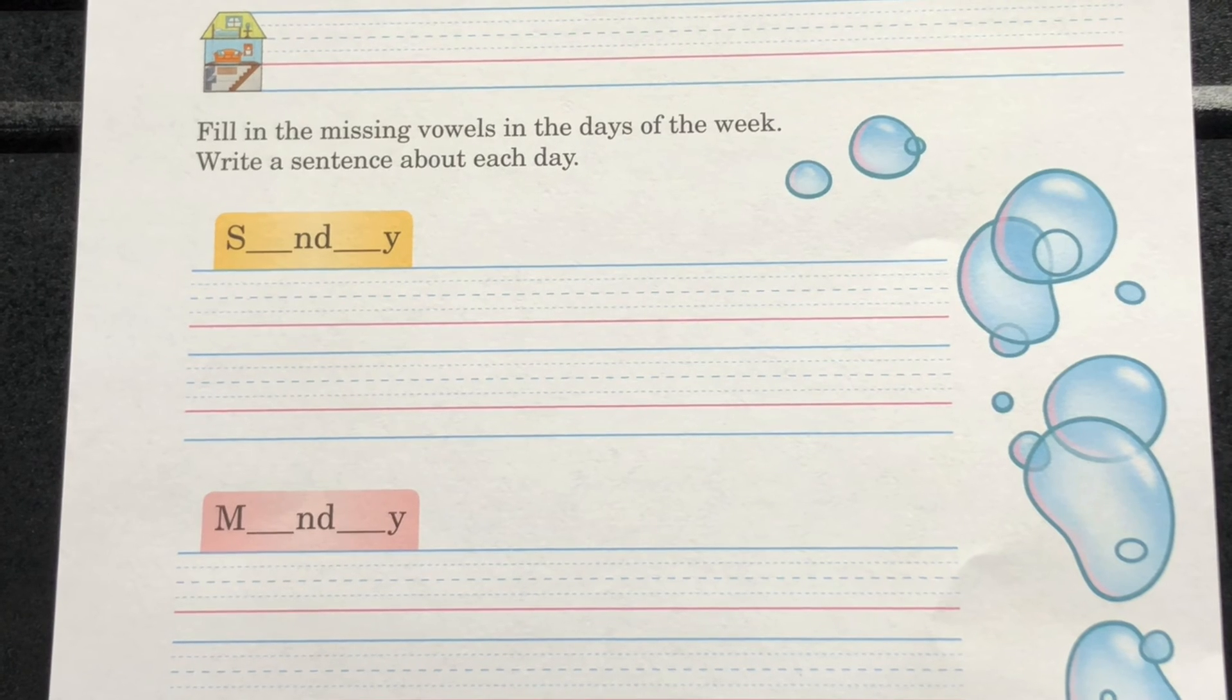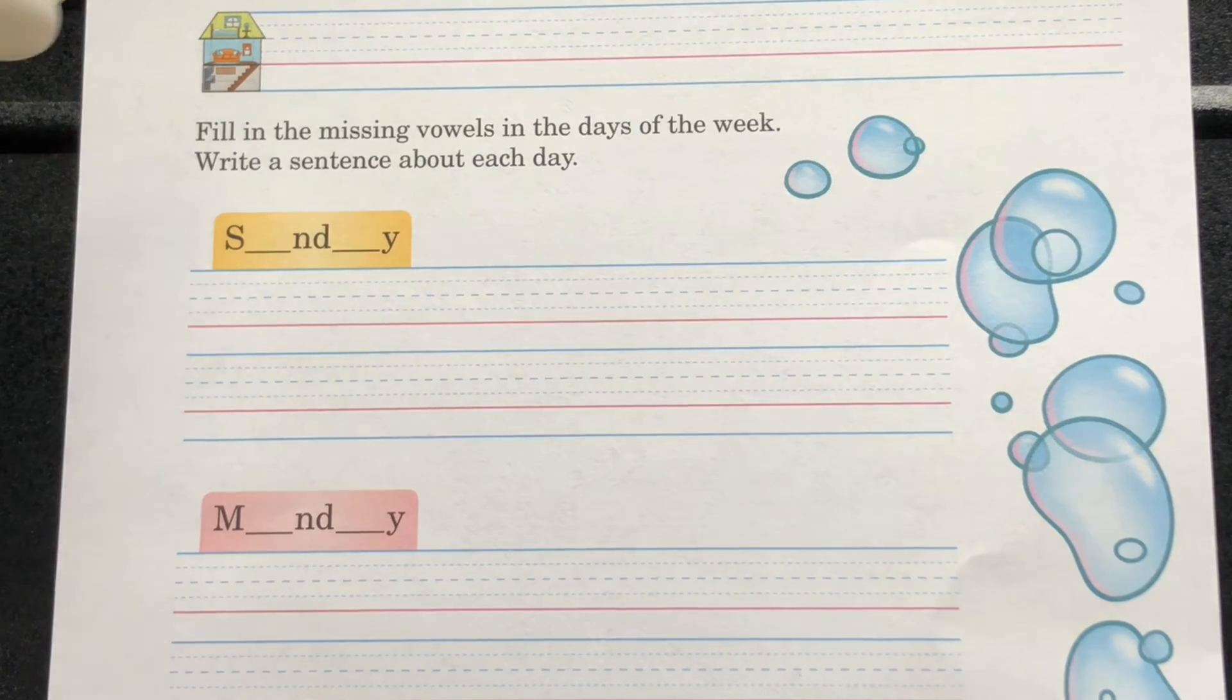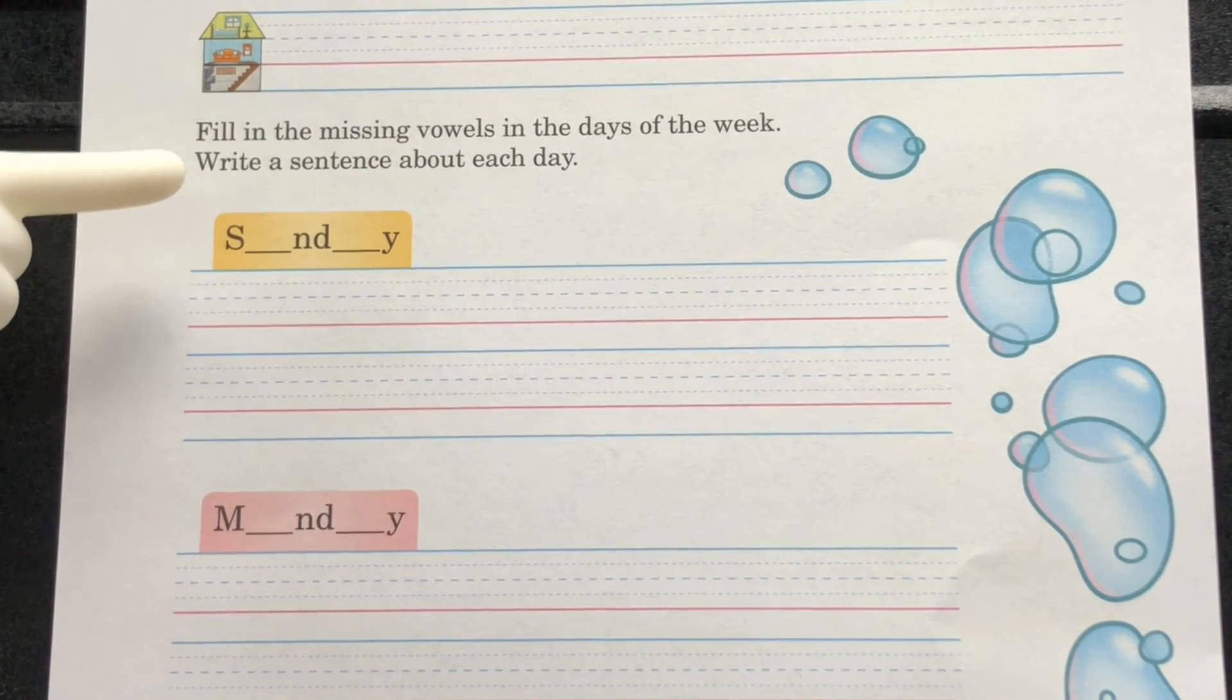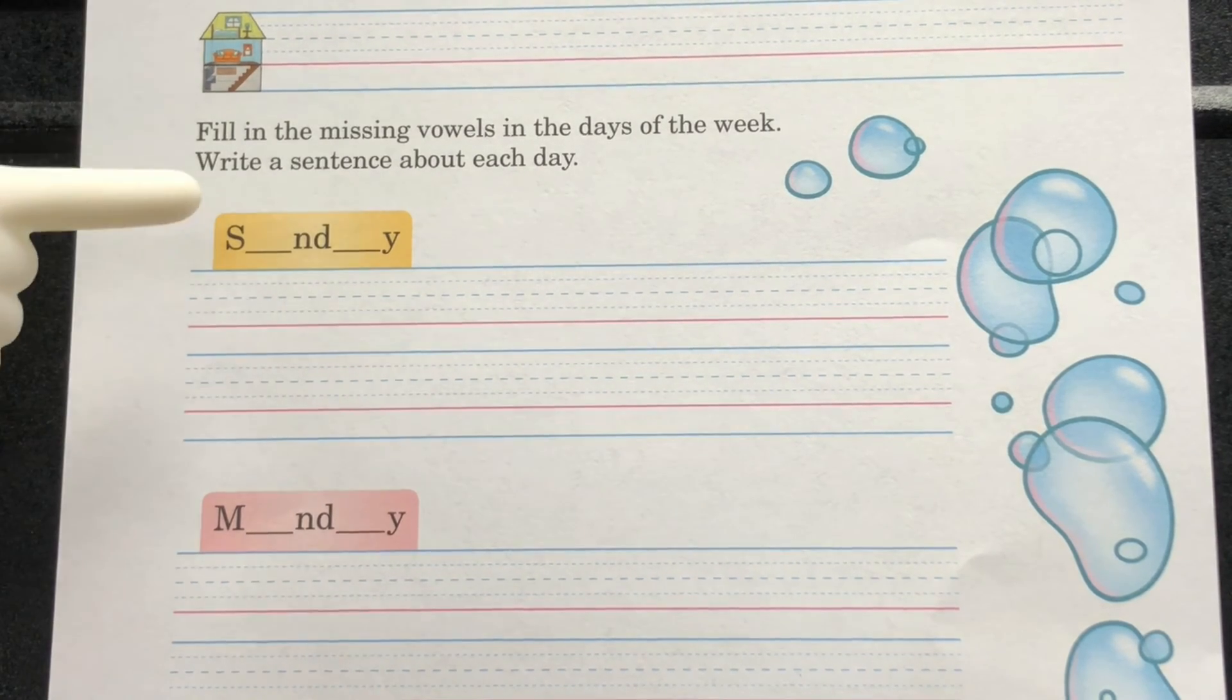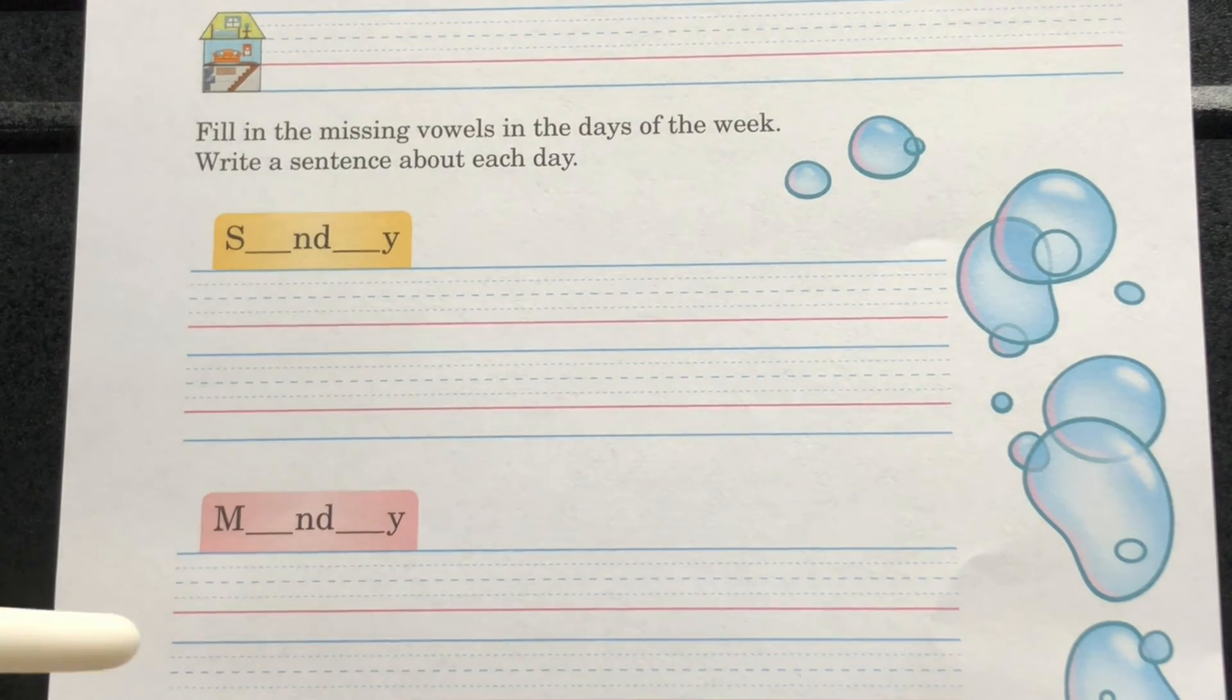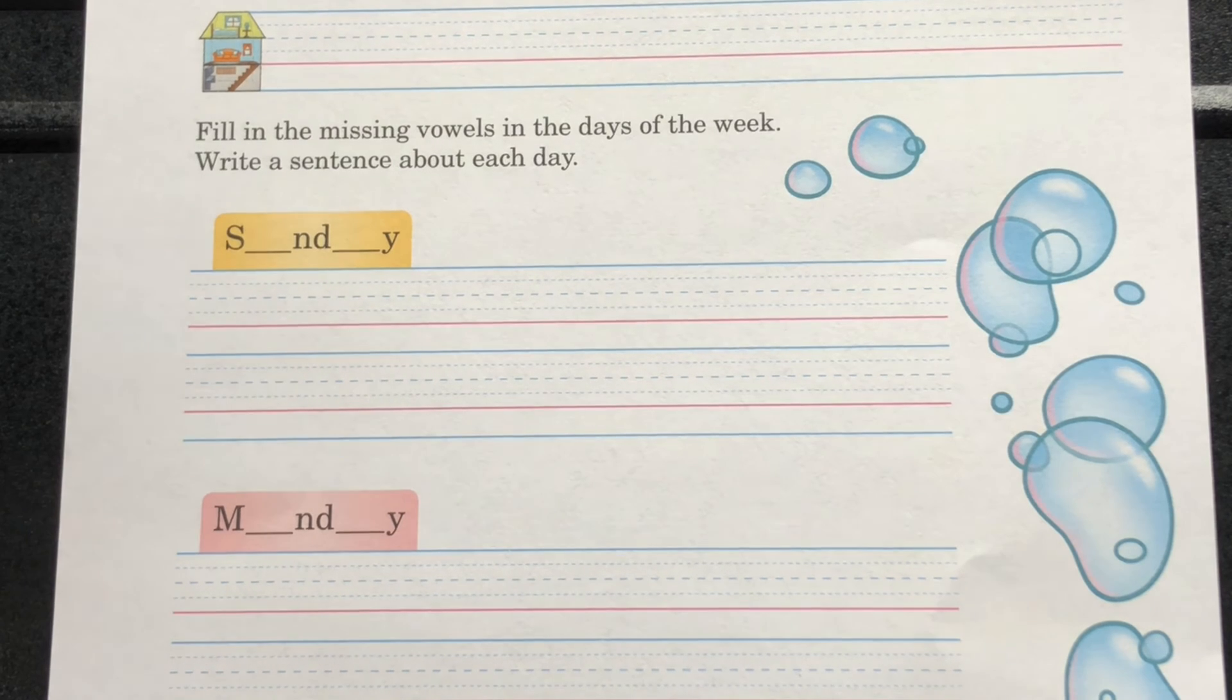Take a look at our Language page 169. Let's take a look at the directions. Fill in the missing vowels in the days of the week. Write a sentence about each day. Here the vowels are missing. You have to go ahead and fill in the vowels and write a sentence about each day of the week that is shown here. You've got Sunday, Monday, Wednesday, and Saturday. Make sure you use your neatest handwriting.